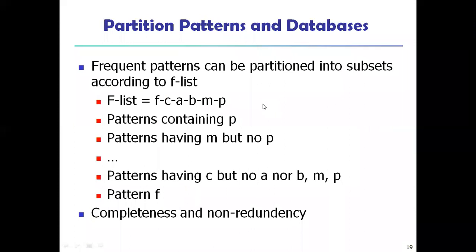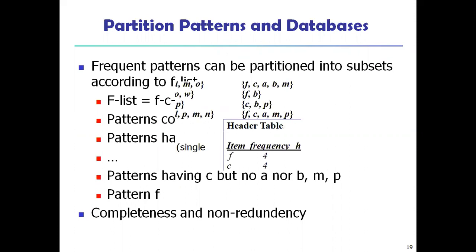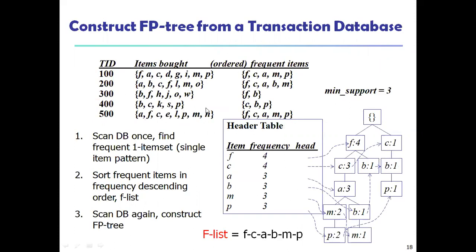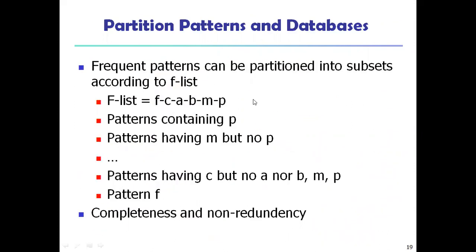This covers database partition patterns and how to make frequent items using FP-growth. Frequent patterns can be partitioned into subsets according to the F-list. In the last class we saw the construction of the F-list and the ordering — how it has been traced. The F-list is: F, C, A, B, M, and P.